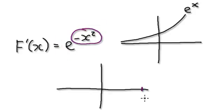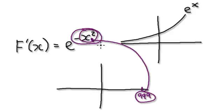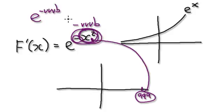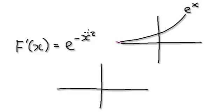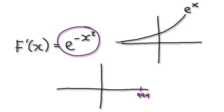When x is very, very big — let's say 999 — if you put this into here, 999 squared gives you a very, very big number. And then you've got this minus here, so it will be e to the power of a very, very large negative number. Looking back at the graph, e to the power of minus very, very big is down here — it will be very, very small. So when x is very, very big, f prime will be very, very small.